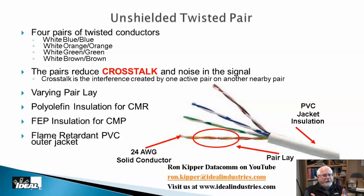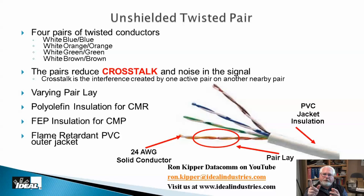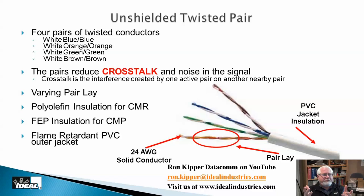One way to eliminate crosstalk is to twist the pairs. A big difference between category wire and old phone wire is that old phone cables were not twisted. The more we twist, the more we eliminate noise. The way it works: a signal is injected down a pair of conductors, with the signal on one conductor inverted relative to the other. The two signals are equal strength but opposite in polarity, so their magnetic fields cancel. The more we twist, the more cancellation we get.